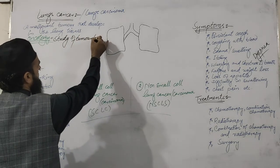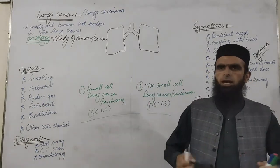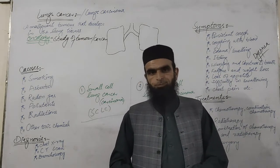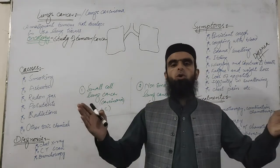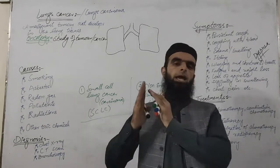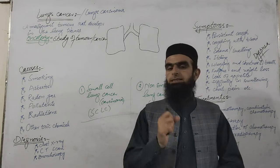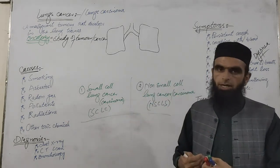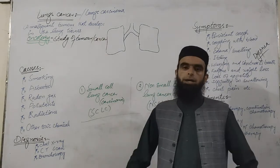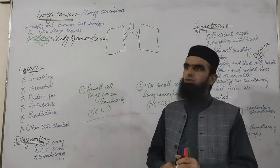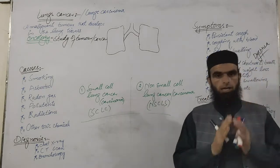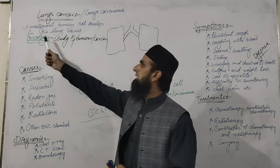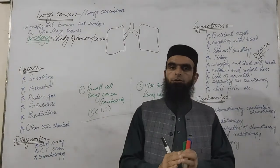Basically, a tumor is a form of cancer. Cancer is an abnormal growth — an abnormal increase in the size and number of the cells of a particular organ of the body. Whenever there is an abnormal increase in the size and number of cells in a particular organ, it is called cancer, or it results in an outgrowth called a tumor. Whenever this is caused in the lungs, it is called lung cancer or lung carcinoma.